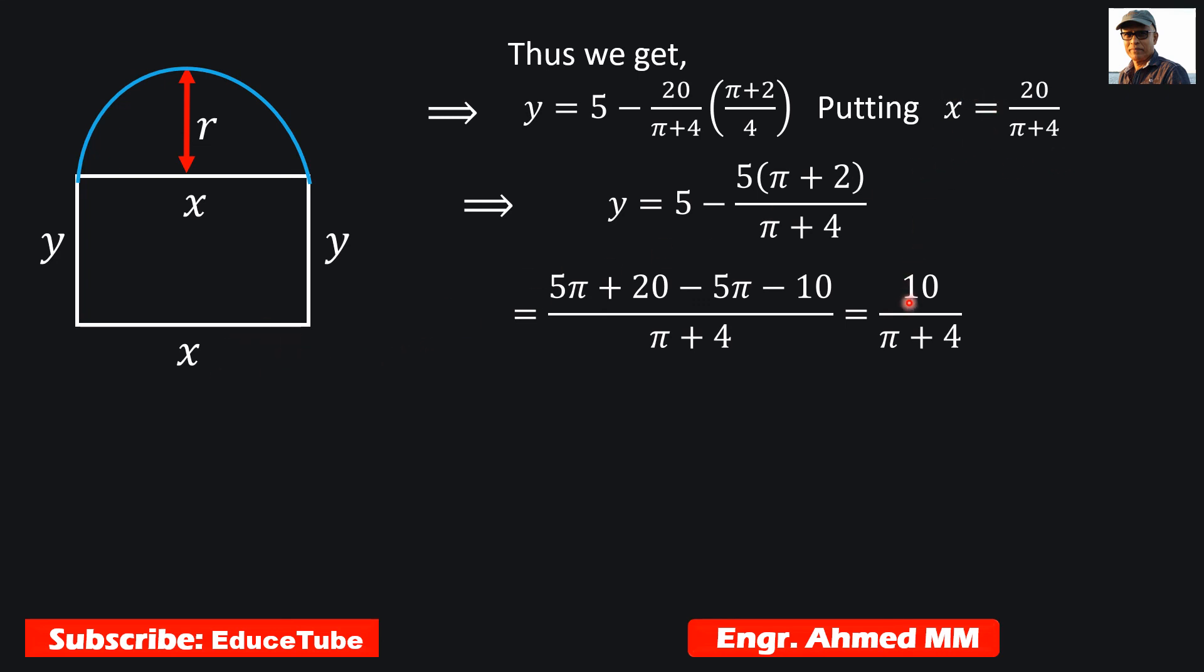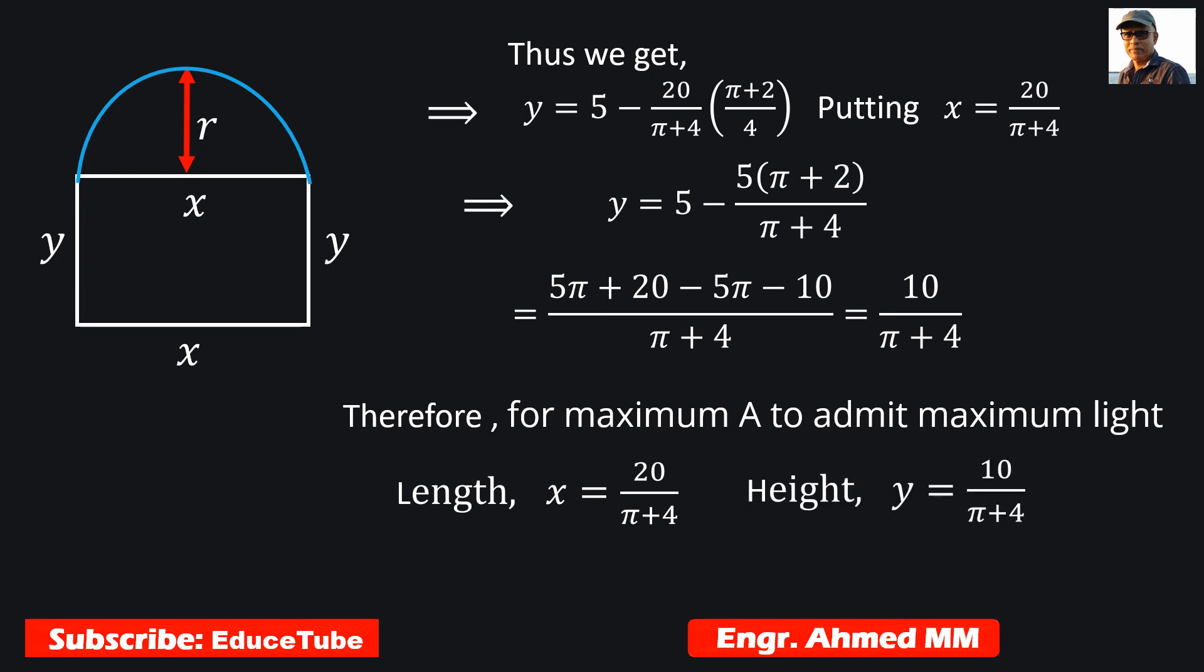We got the value for x, we got the value for y. To admit maximum light, we need length x equal to 20 by pi plus 4, and height y equal to 10 by pi plus 4. That's the value we need. So we are done for this problem. That's all for this.